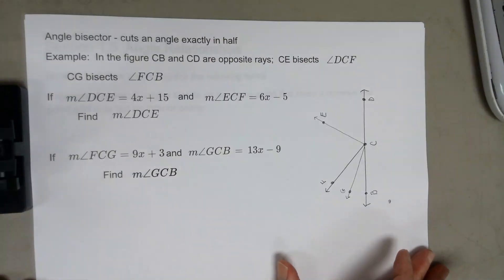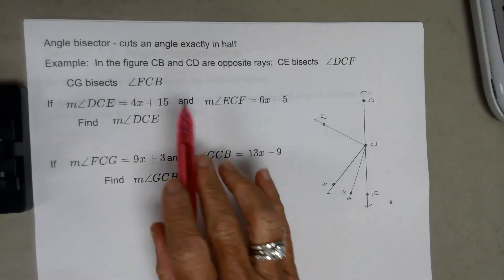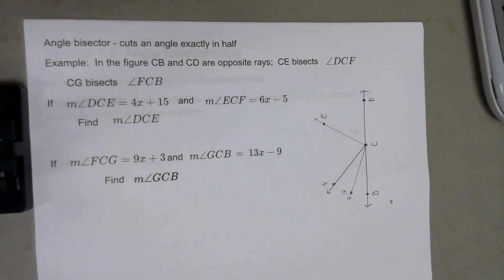An angle bisector cuts an angle exactly in half. We'll have to be able to use that concept in problems.